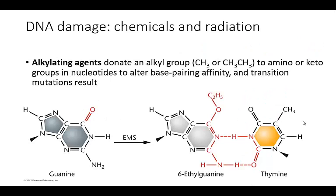Alkylating agents are going to donate an alkyl group — CH3 or CH3CH3 — to amino or keto groups in nucleotides, and they will also alter base pairing affinity. This leads to transition mutations or point mutations. For example, with a guanine, an alkyl group is added to the oxygen, which causes differential binding to thymine. So when this is being replicated, we get an insertion of a thymine where we would normally find a cytosine.